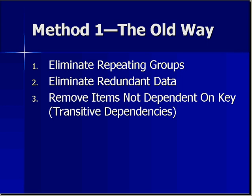Here's method one, the old way. Basically three steps: you eliminate repeating groups, then you eliminate redundant data, and then you remove items not dependent on the primary key — that means getting rid of transitive dependencies.